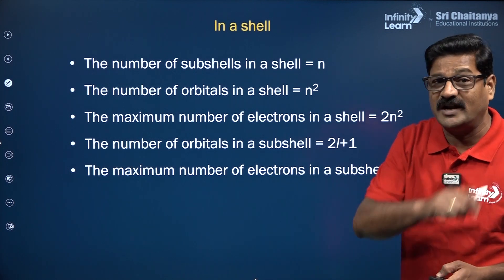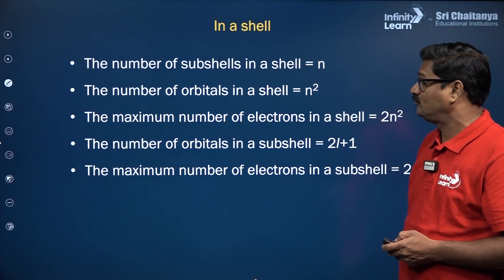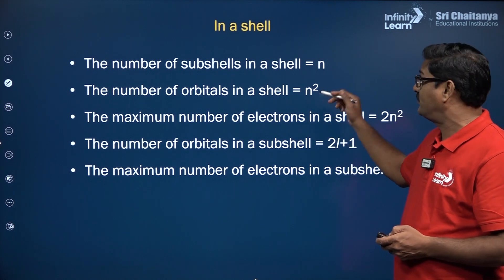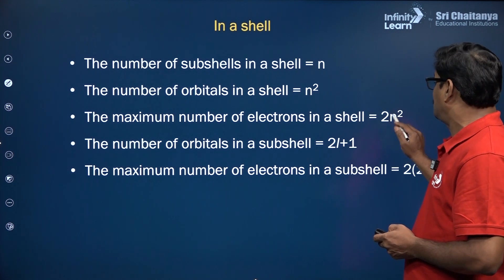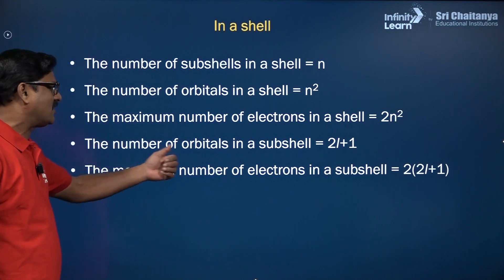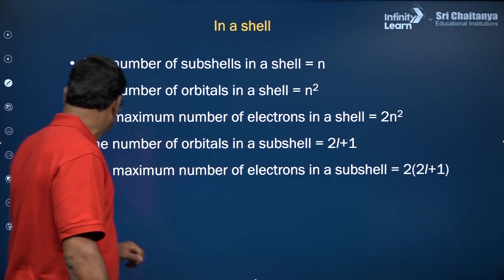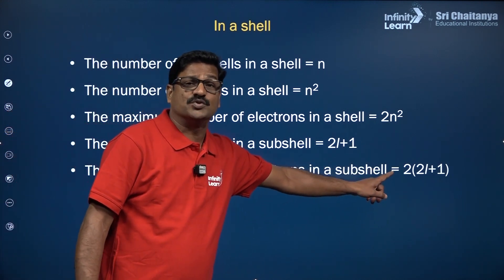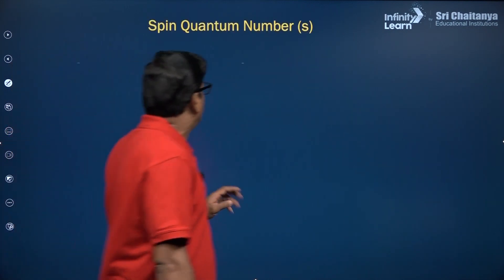From this, you can expect a question in the NEET examination. The number of sub-shells in a shell is N; the number of orbitals in a shell is N²; the maximum number of electrons in a shell is 2N² (Bohr's Bury principle); the number of orbitals in a sub-shell is 2L+1; and the maximum number of electrons in a sub-shell is 2(2L+1) = 4L+2.